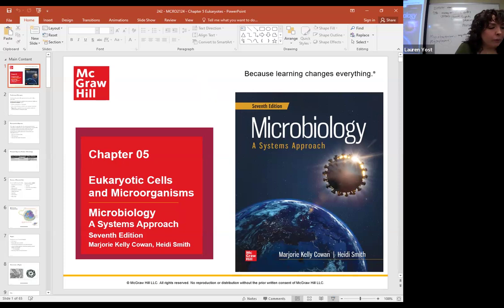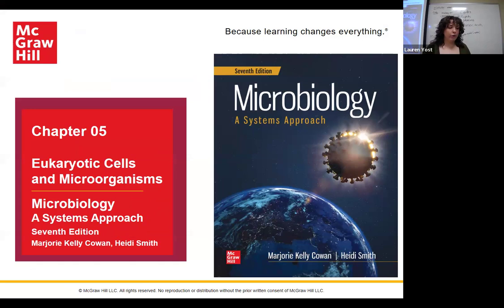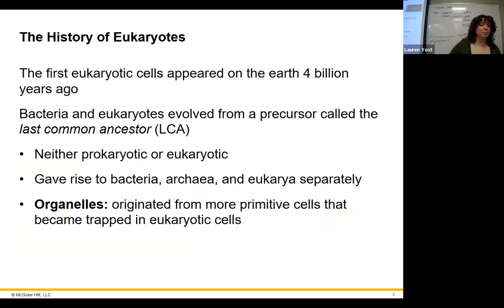We're going to talk about the eukaryotes today. Eukaryote means 'true nucleus' — 'eu' means true, 'karyon' means nucleus. These are potentially the more advanced cells. They have a true nucleus and all compartmentalized specialized areas in their cells, which we call organelles.